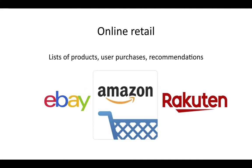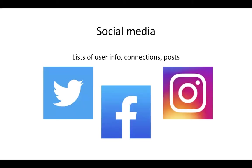E-commerce is a very profitable business. eBay, Amazon, and Rakuten are some of the largest companies in the space. They also have to keep lists of products — specifically products users are purchasing through the online market — as well as track user preferences, user purchases, and make recommendations based on previous purchase history. For social media — Twitter, Facebook, and Instagram — there are many millions of users, and they have to keep track of connections between different users, as well as user information and any posts or multimedia.